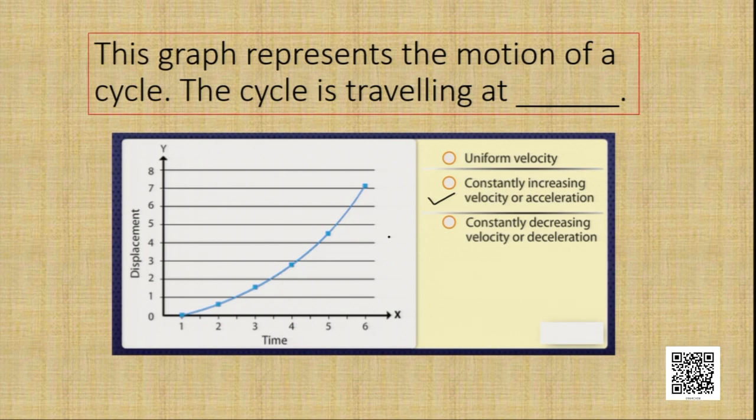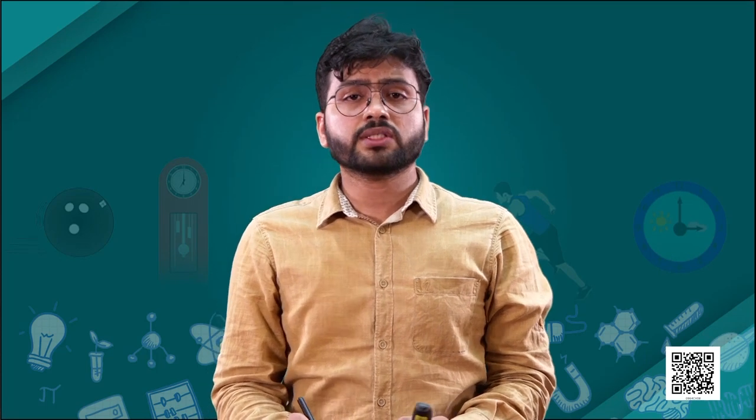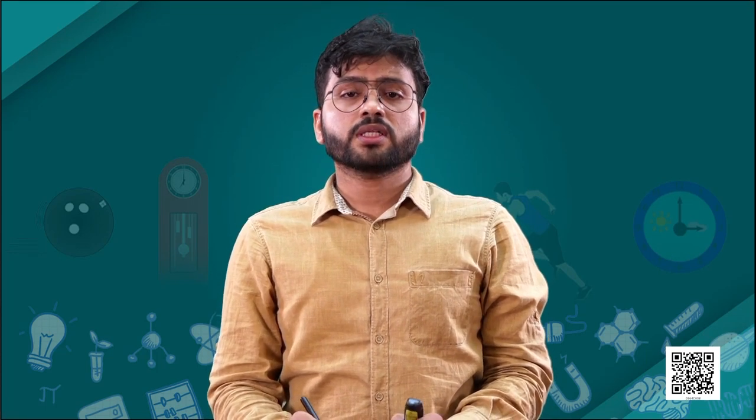Now let's look at another question: what is the quantity measured by the area occupied below the velocity-time graph? We had already solved this type of question in this module. The area occupied below the velocity-time graph represents the distance traveled by that object, because velocity multiplied by time gives distance. So the area below the velocity-time graph gives us the distance traveled in a given interval of time.